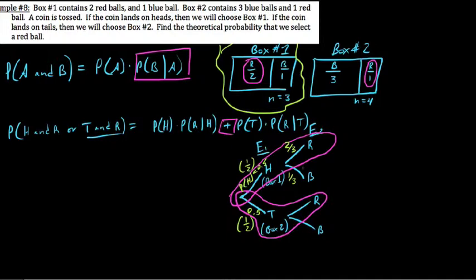And then the Box number 2, which was if we flipped a tails, we say what's the likelihood we get a red? Well, there's one red out of four total, so this is a one in four chance. Let's write that down. One in four chance, and this is a three in four chance down here.